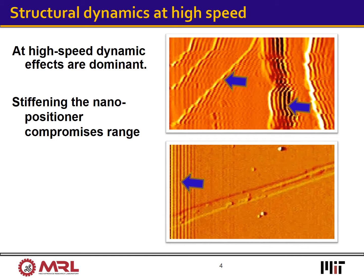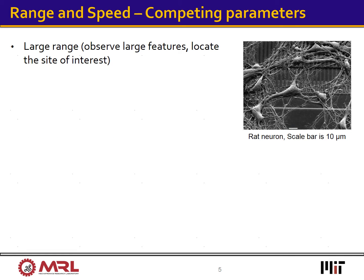One solution is to design stiffer nanopositioners that do not vibrate so easily. However, stiffening the positioner reduces the available positioning range, which is another very important characteristic of a nanopositioning system. The range of a nanopositioner — or in other words the field of view in the context of nanoscale microscopy — is as important as the speed.